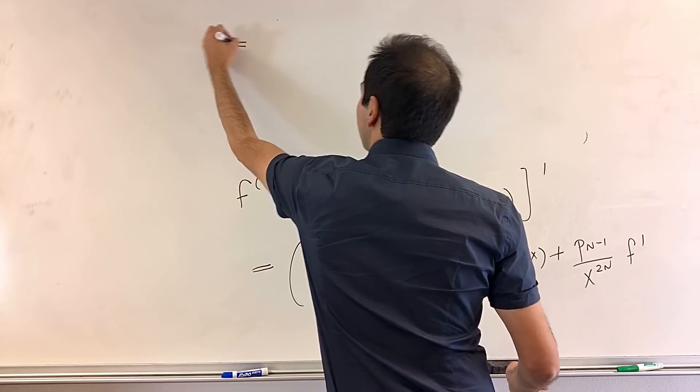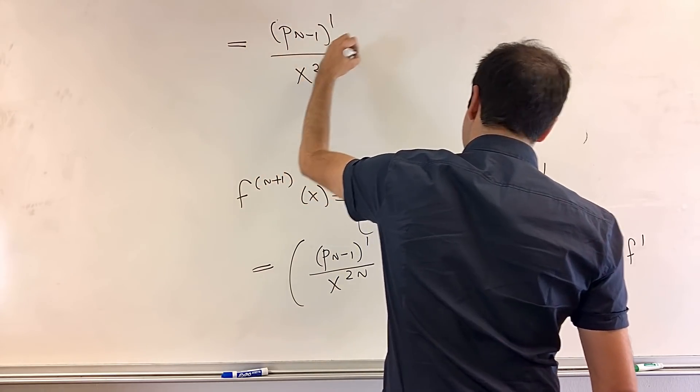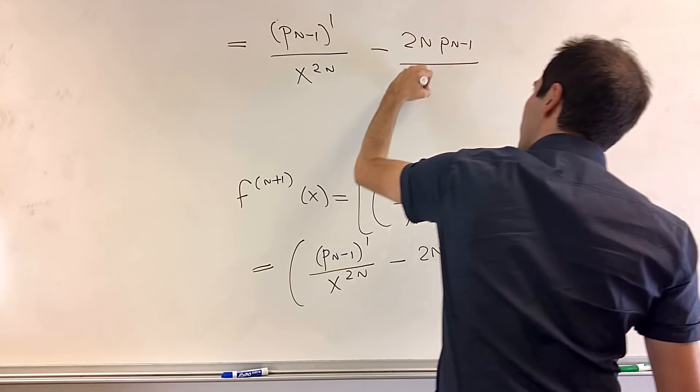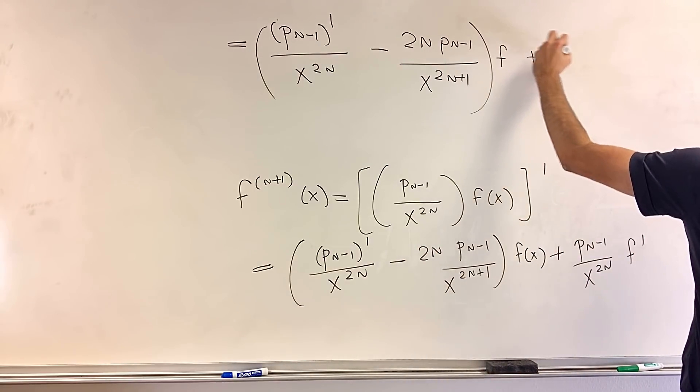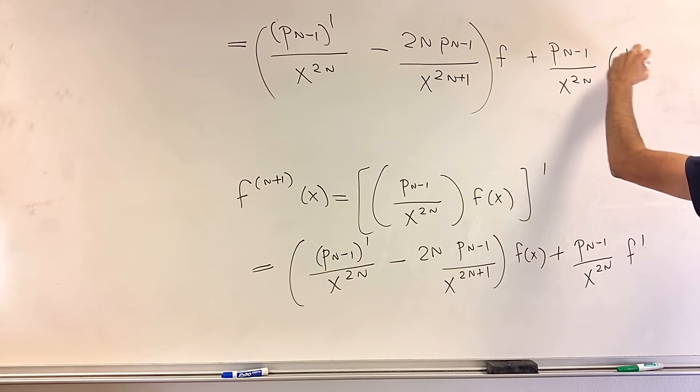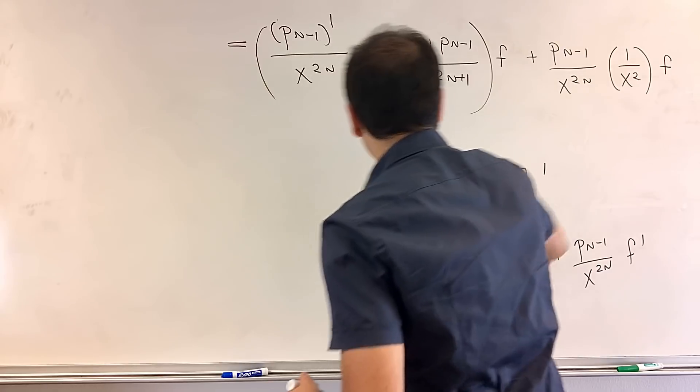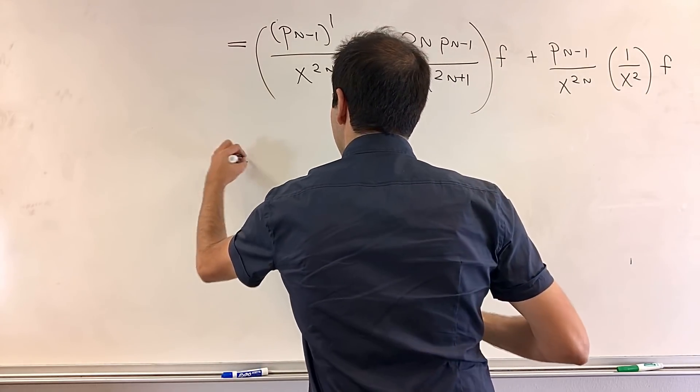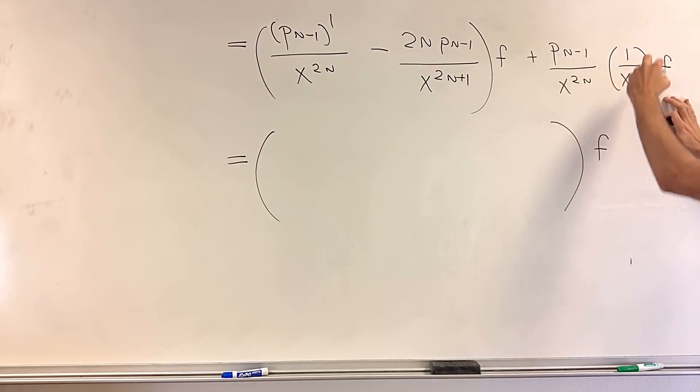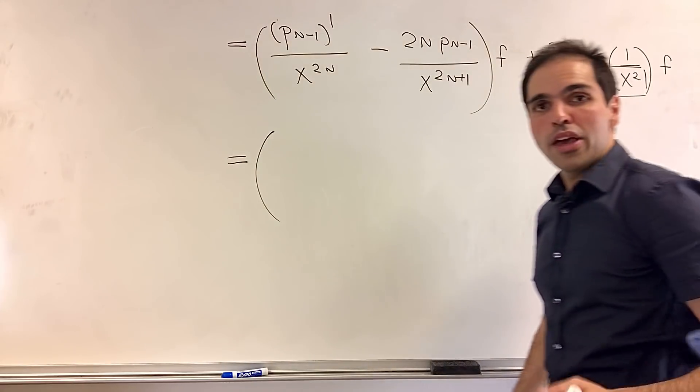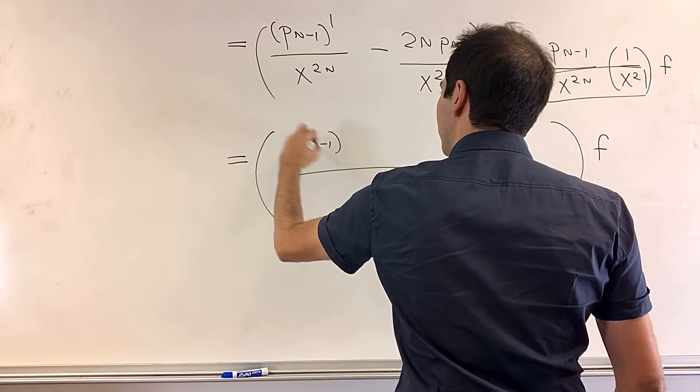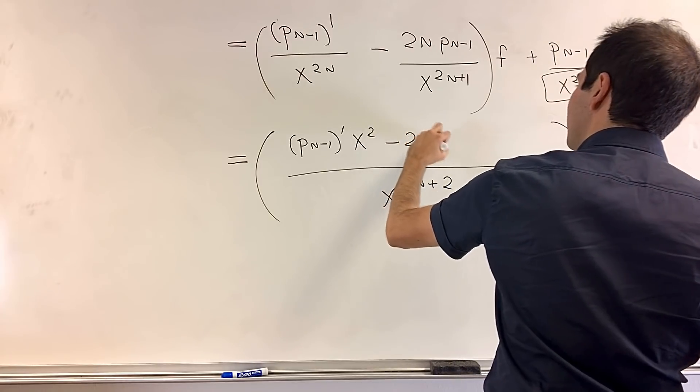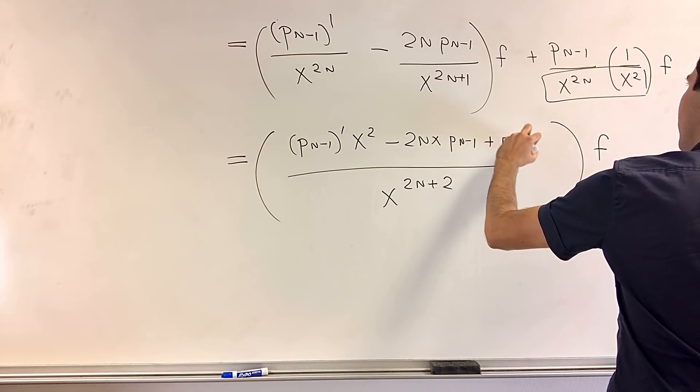But the nice thing is, what is f prime? It is, I think, 1 over x squared times f. So really what we have, again, p n minus 1 prime over x to the 2n minus 2n, p n minus 1 over x to the 2n plus 1, f, and then plus p n minus 1 over x to the 2n, and 1 over x squared times f, and the nice thing is now we can put everything on a common denominator, because we can factor out f. And again, what's the common denominator? x squared times x to the 2n is x to the 2n plus 2, which is, by the way, what we want, plus 2, and then what we get is p n minus 1 prime times x squared, and then minus 2n x, p n minus 1, and then plus p n minus 1, just like that.